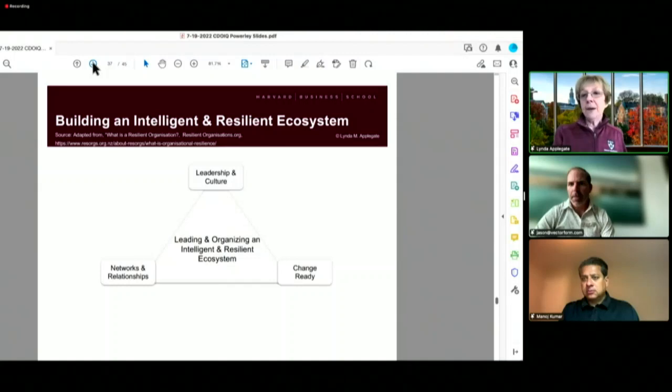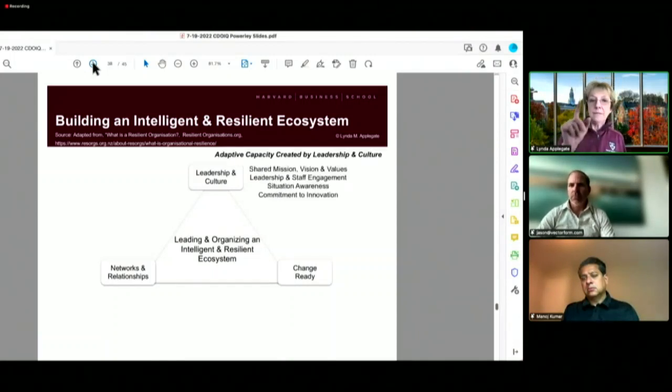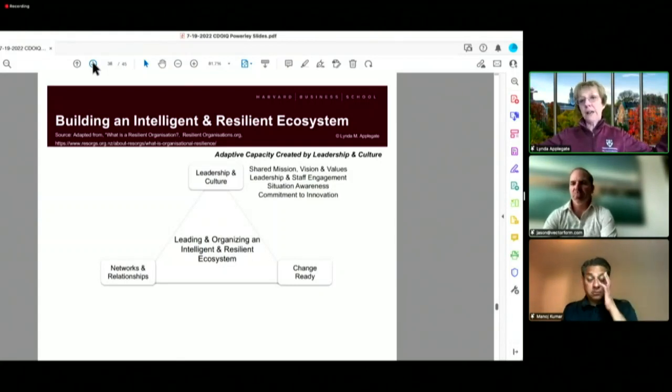If I think about building an intelligent, resilient ecosystem, I'm going to give you this as something to think about. What do they need to do to be able to build this? First of all, leadership and culture. Is it change ready? And do we have the networks and relationships? For leadership and culture, what I look for is adaptive capacity created by leadership and culture.